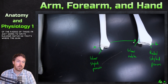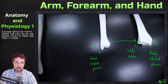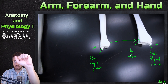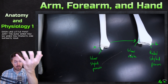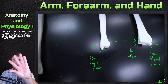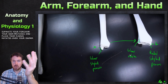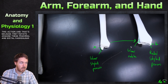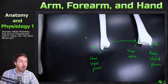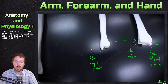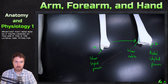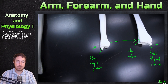The ulna fits into that ulnar notch, forming both a proximal and a distal radioulnar joint — these are pivot joints. When you pronate and supinate your forearm, the ulna stays in place while the radius rotates over it. The styloid processes together form a little pocket, which is your wrist joint. Using the styloid processes and knowing the radius is lateral, you can determine left versus right — this would be the right side.